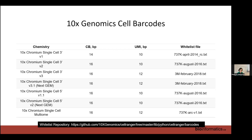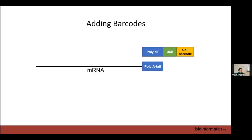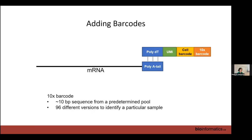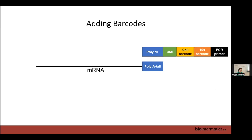After the cell barcode, we add a 10x sample barcode — 10 base pair sequences from a predetermined pool, coming in a kit of 96 different ones — used to identify a particular sample. If you sequence 12 different mice, give each a different 10x barcode, then pool them together for sequencing, which reduces sequencing costs.